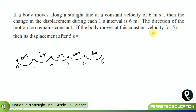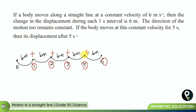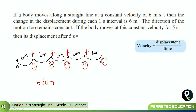If the body moves at this constant velocity for 5 seconds, then its displacement after 5 seconds will be 6 + 6 + 6 + 6 + 6 meters, making a total of 30 meters. You can't do it by hand for 100 or 1,000 seconds, so you need an equation. We have an equation: velocity equals displacement divided by time. They are asking us to find the displacement. Velocity is given as 6 meters per second and time is given as 5 seconds.